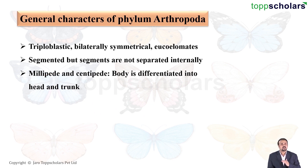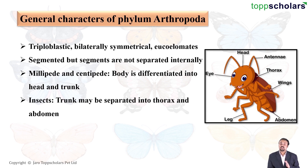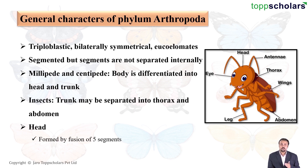There are certain arthropods like millipede and centipede whose body is differentiated into only two parts: the head and the trunk. In insects, the trunk is divided into the thorax and the abdomen. The head is itself made up by the fusion of five separate segments and generally contains various sense organs like antennae, eyes, and mouth.